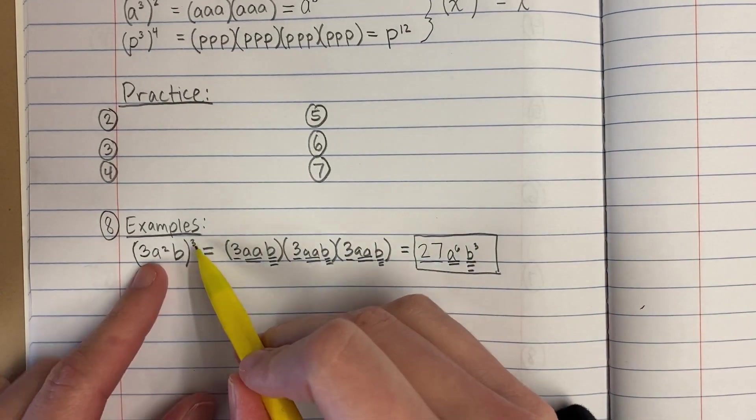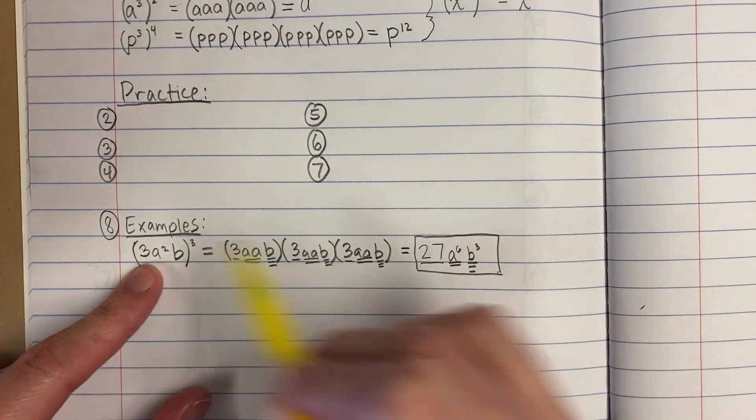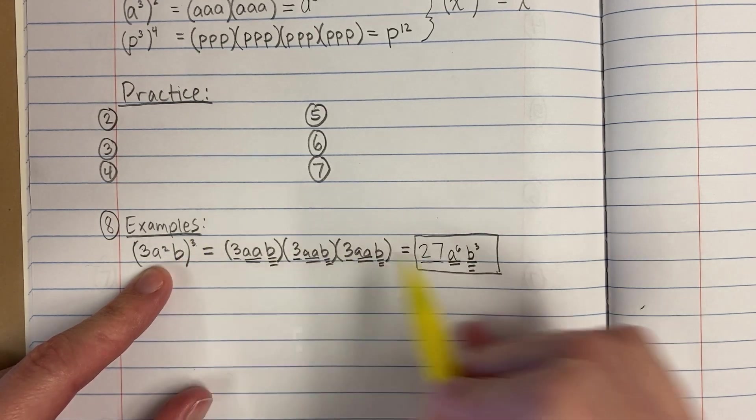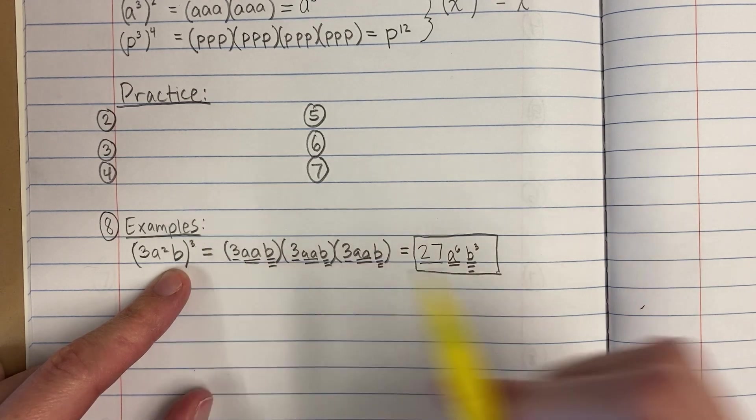Okay, and you might observe that what that is, is that's 3 to the 3rd power, right? 3 to the 3rd power is 27. These two got multiplied. 2 times 3 is 6. And this, you could imagine an invisible 1 there. 1 times 3 is 3.